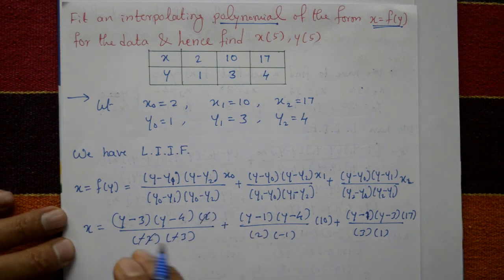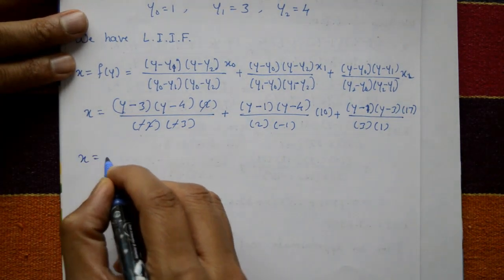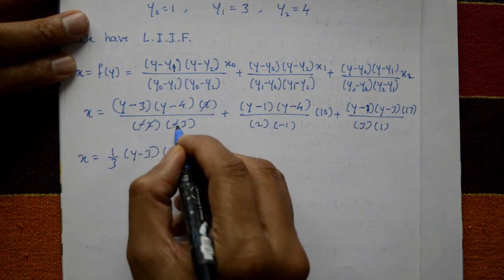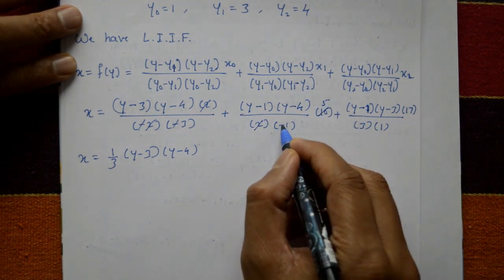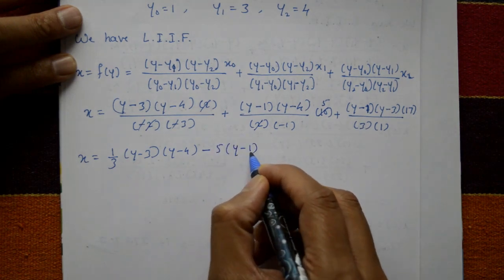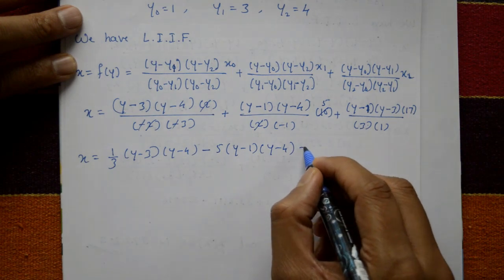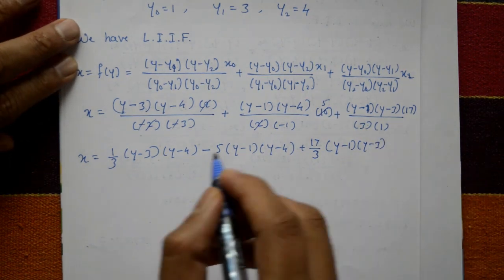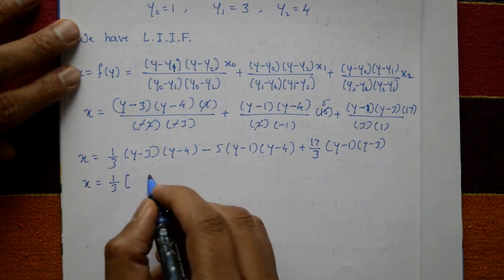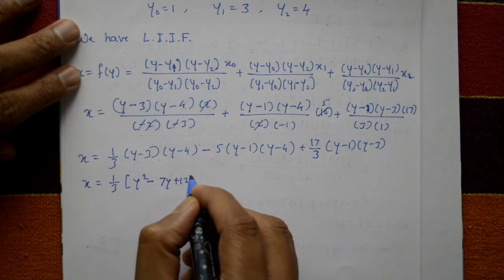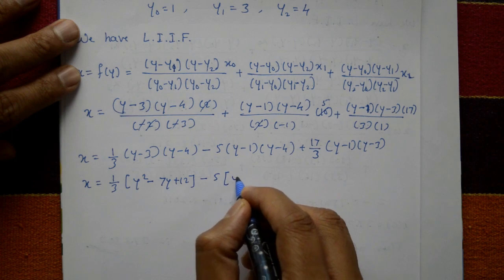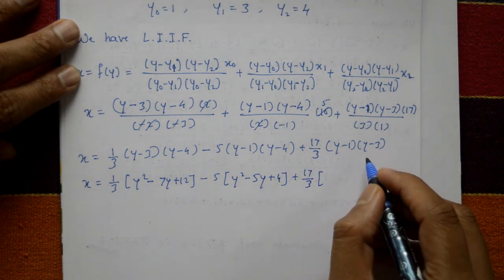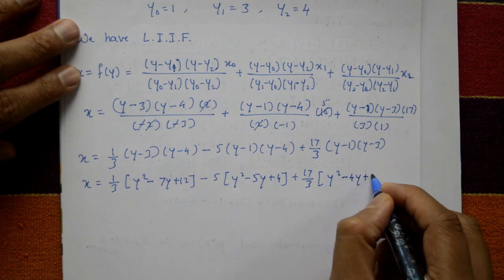Simplifying: x = (1/3)(y − 3)(y − 4) minus 5(y − 1)(y − 4) plus (17/3)(y − 1)(y − 3). Expanding the brackets: x = (1/3)(y² − 7y + 12) − 5(y² − 5y + 4) + (17/3)(y² − 4y + 3).